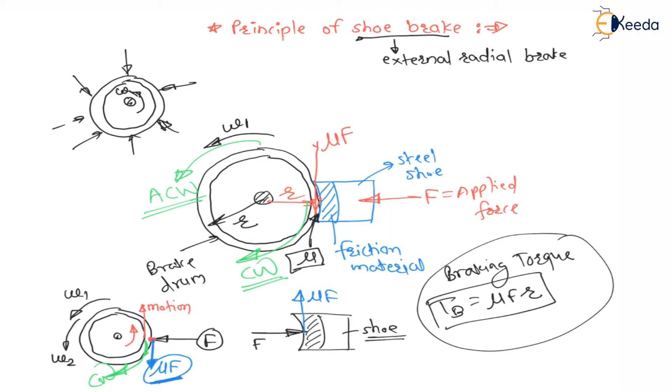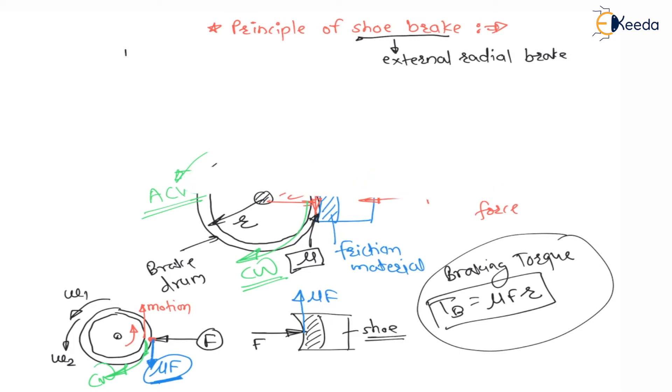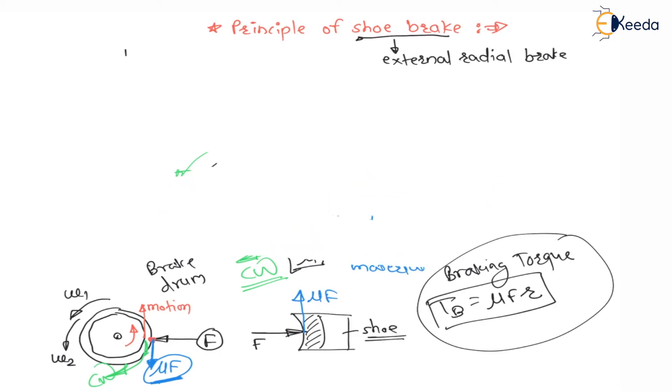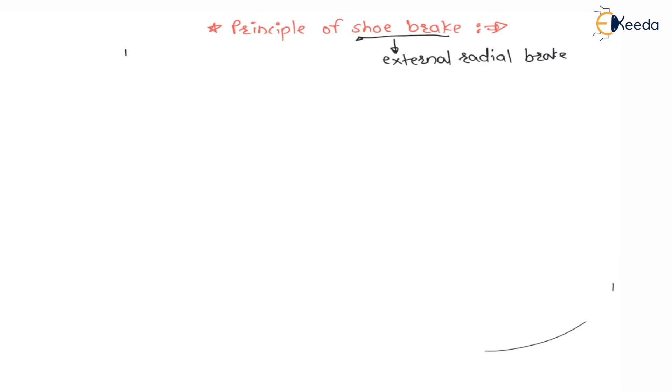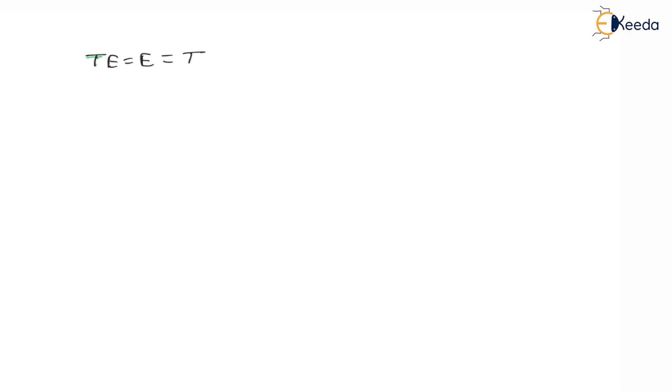Our target is to find the total energy, which is nothing but heat generated. The total energy — also called energy — is equal to the braking torque into the angle of rotation theta. This was also seen in the previous lecture. This is the principle of braking: Tb × θ = heat generated.